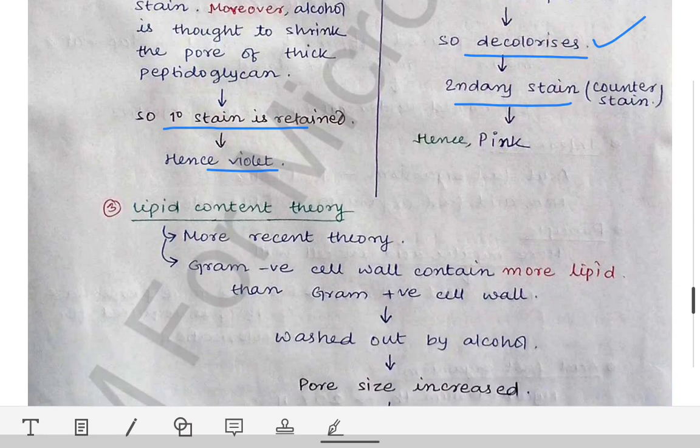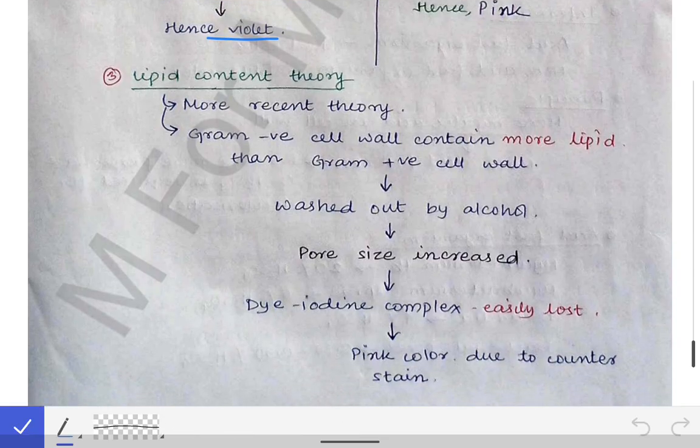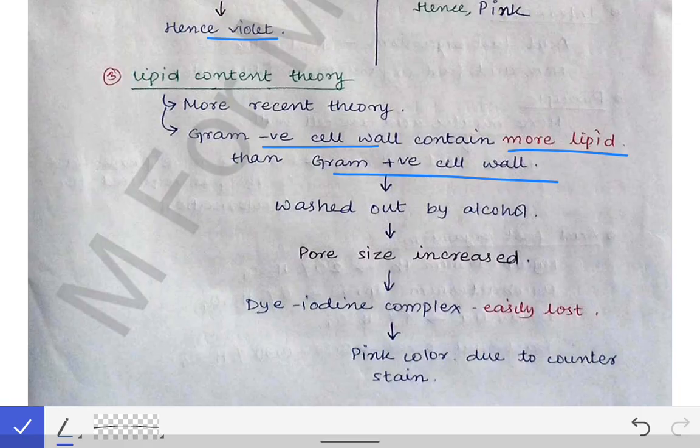Next comes the lipid content theory, which is the most recent theory. It states that the Gram-negative cell wall contains more lipid than the Gram-positive cell wall. During the decolorization step, when the smear is treated with acetone or alcohol, the lipid in the Gram-negative bacterial cell wall is washed out, creating pores in the cell wall.